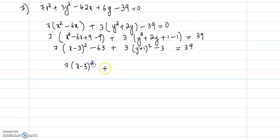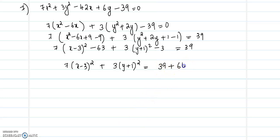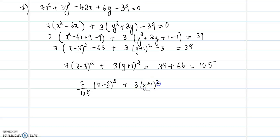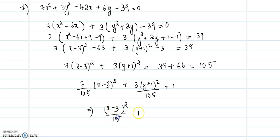We will get 7(x minus 3) whole squared plus 3(y plus 1) whole squared equal to 39 plus 69, which comes to 105. Upon dividing by 105 on both sides, 7 by 105 times (x minus 3) whole squared plus 3(y plus 1) whole squared by 105 equals 1. That gives us (x minus 3) whole squared over 15 plus (y plus 1) whole squared over 35 equal to 1.